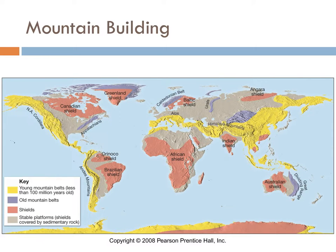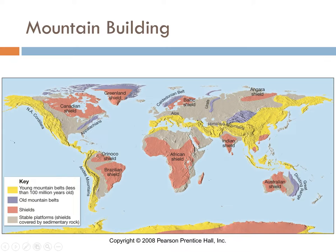Here you can see young and old mountain belts throughout the earth. The young ones are in yellow — including the North American Cordillera and the Andes Mountains down the western coast of North and South America, plus pretty much all of Central America. There's also a band that goes through the Mediterranean across the Himalayas and out into East Asia and down into Indonesia. The purple belts are older mountains; the Urals formed when Eurasia came together. We also have the Caledonian and the Appalachian Mountains, which are concurrent in age, formed when Pangea was assembled. You can also see shield locations — a shield is a really old, really stable piece of crust where you find the oldest rocks on earth.